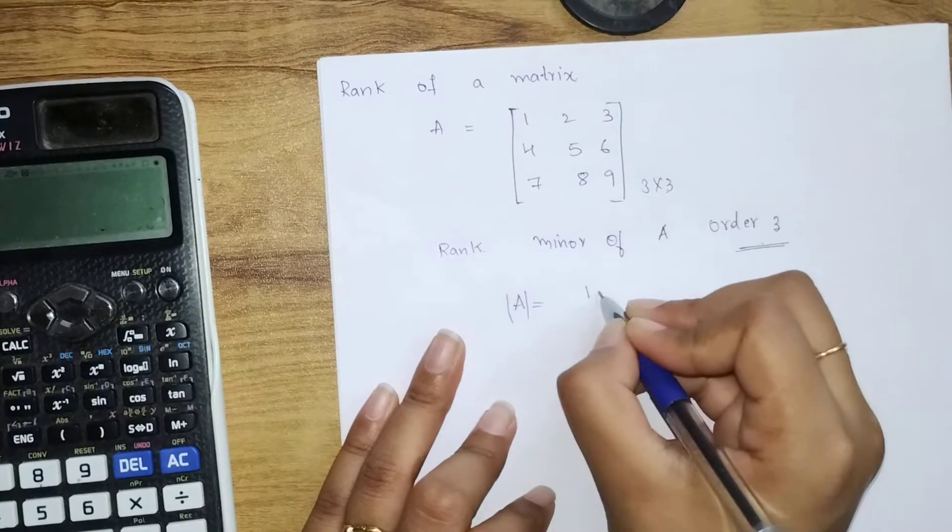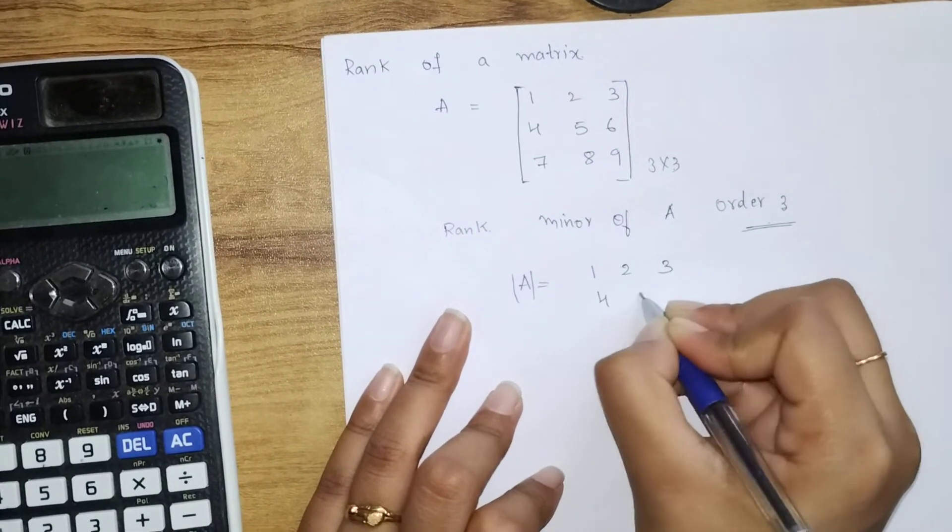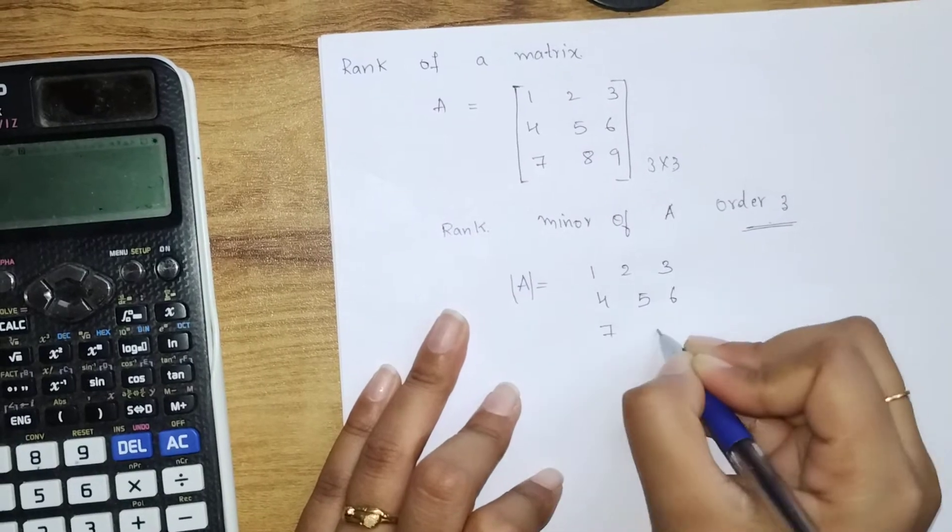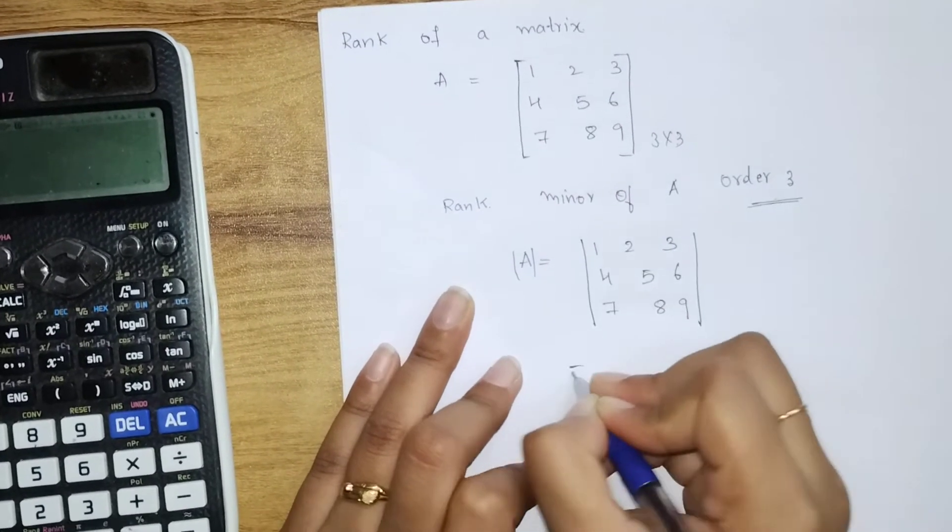The determinant of A - we are finding the matrix: 1, 2, 3, 4, 5, 6, 7, 8, 9.